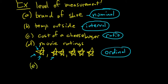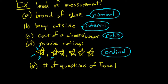Example E: number of questions on exam one. It could be zero questions — zero is the starting point for this set of numbers. So in this case it would be ratio.